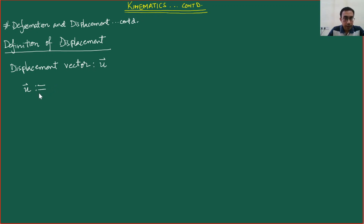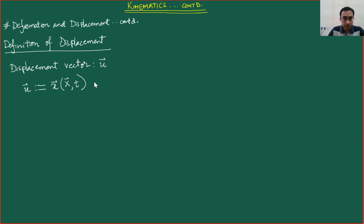The displacement vector, depicted by small u, is defined using the colon-equals notation, which is the symbolic representation of a definition. We define it as the difference between the final position vector, which is a function of the initial position vector. In component form this will be given by three components u1, u2, and u3.